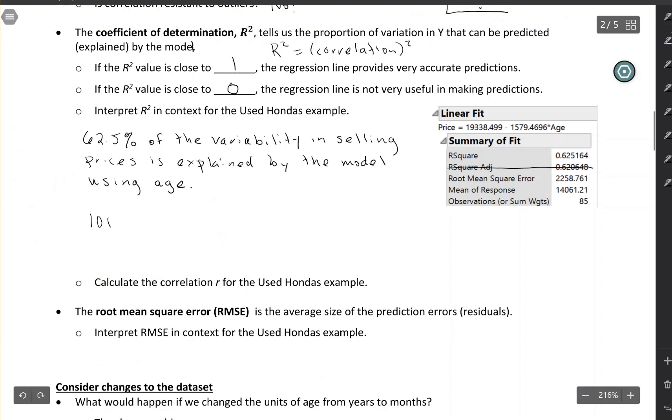But there still is unexplained variability. So if you do 100 minus 62.5, then you would get 37.5. So 37.5% of the variability is unexplained. We can think about a bunch of other factors that could affect the prices that we're not taking into account here. Maybe mileage would make a difference. That's related to age, but not quite the same thing. Accident history, condition, other things that could be affecting the price of the car that we haven't taken into account in this model.